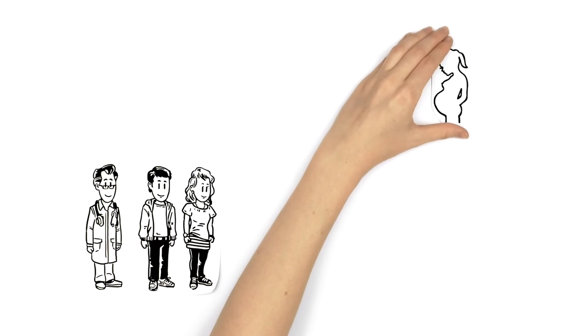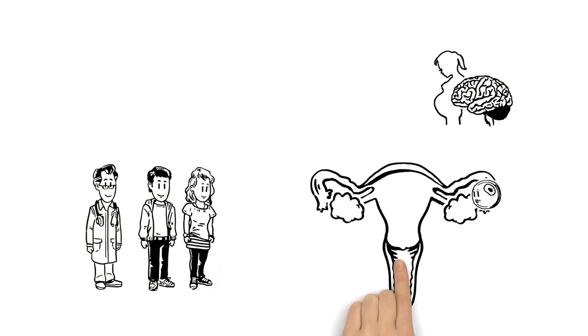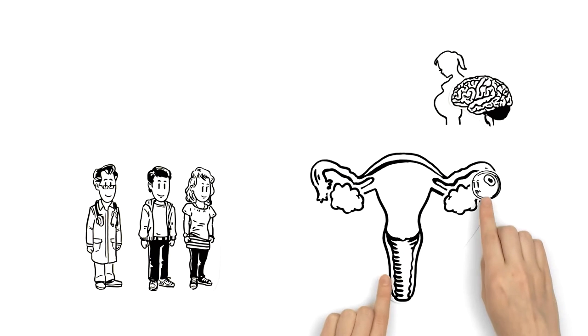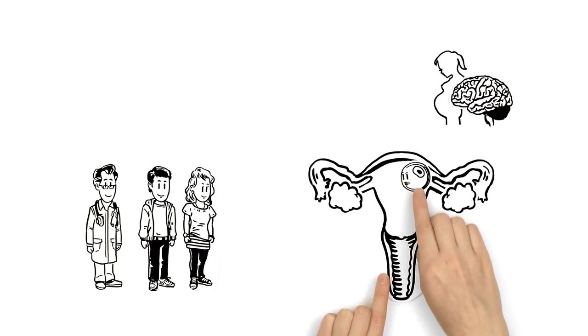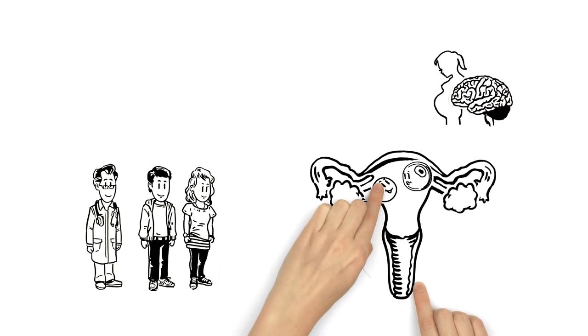In order for a woman to get pregnant, her body releases an egg cell from her ovaries. It moves into the womb, where it waits for a sperm cell to fertilize it.